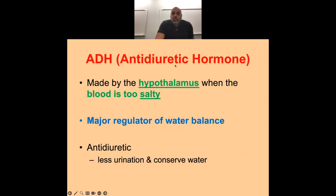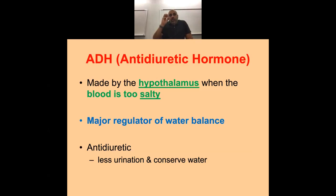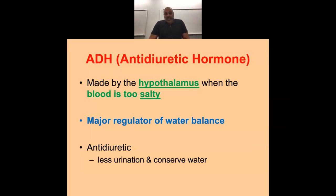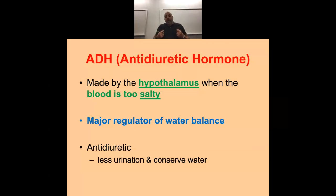ADH, antidiuretic hormone, is made by the hypothalamus. The hypothalamus monitors your blood as it passes by. If it sees too much osmolarity — too much solute in there — it says I need to hold onto water so I can dilute this. So it releases ADH. ADH tells the kidneys to insert aquaporins and pull the water out of the nephron back into the bloodstream to conserve it.